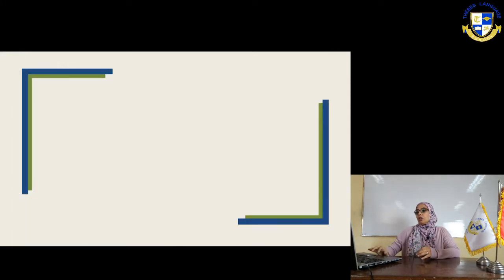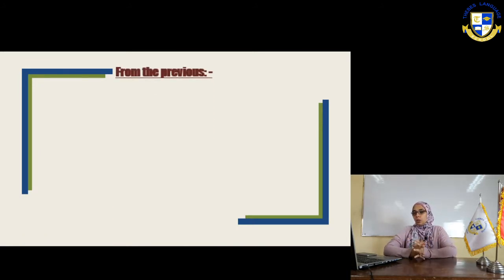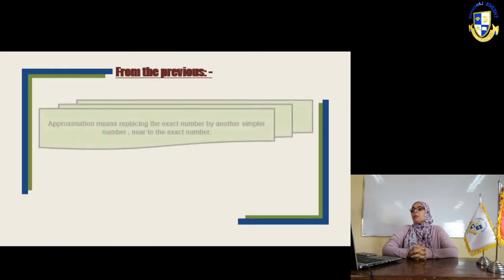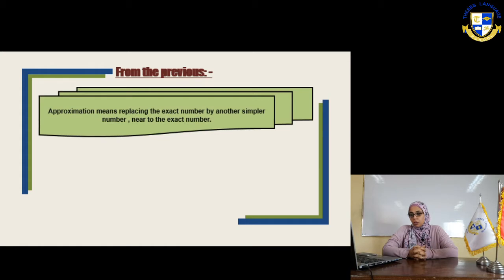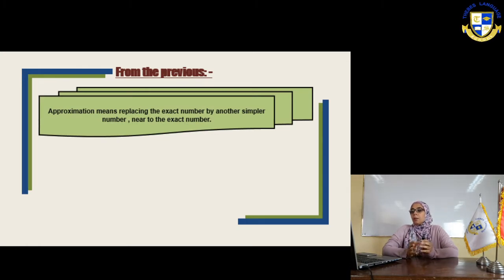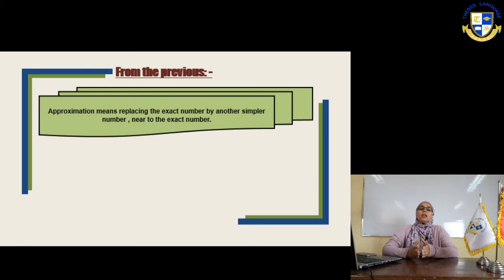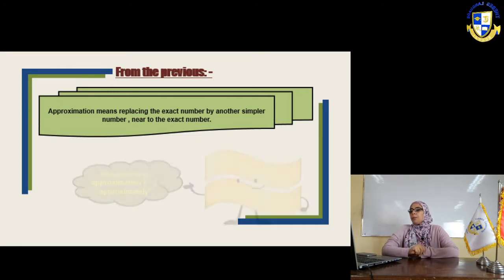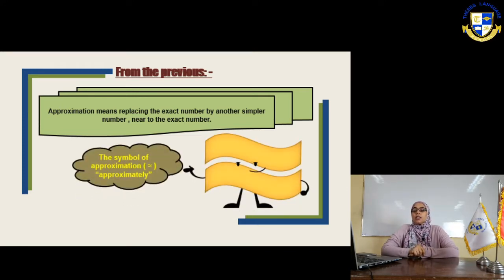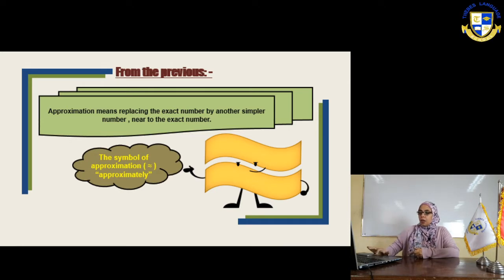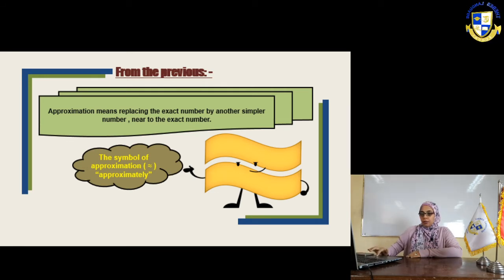So, from all which we said, what is the exact meaning of approximation? Approximation means replacing the exact number by another simpler number near to the exact number. And we have the symbol of approximation — this sign — we read it as 'approximately'.